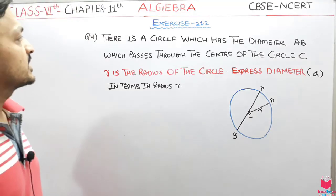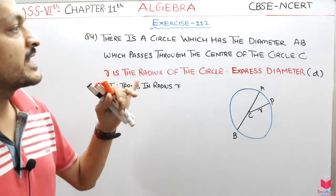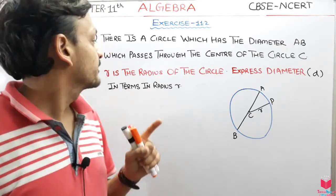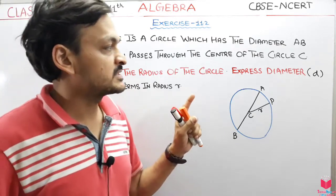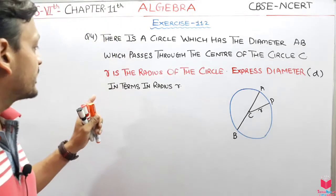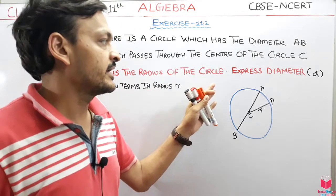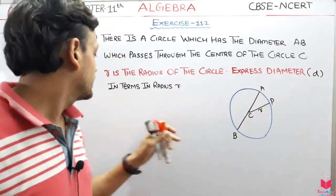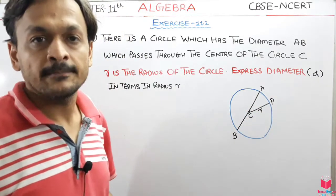There is a circle which has the diameter AB, which passes through the center of the circle C. R is the radius of the circle — express diameter D in terms of radius R.